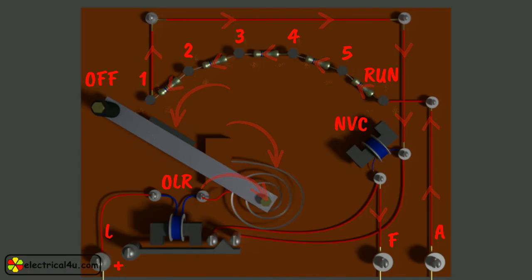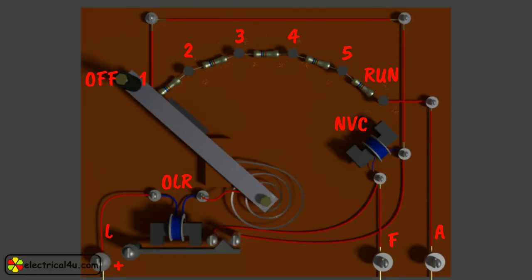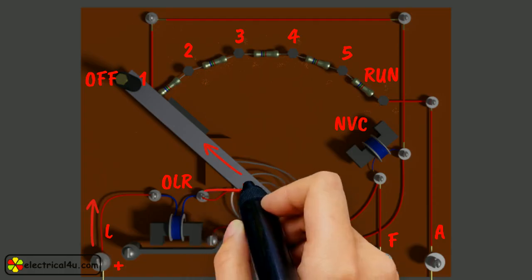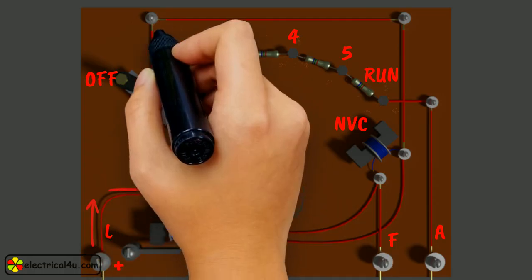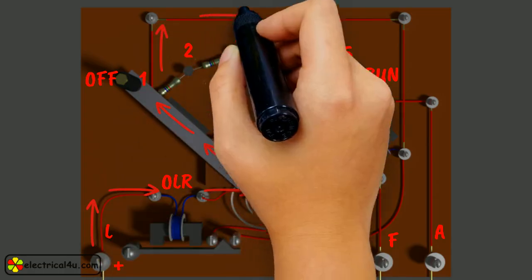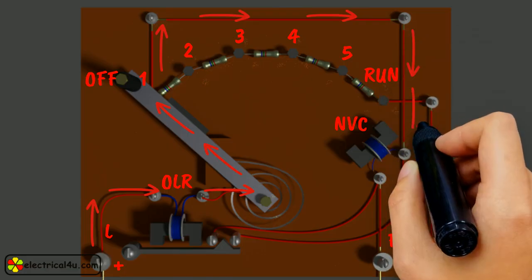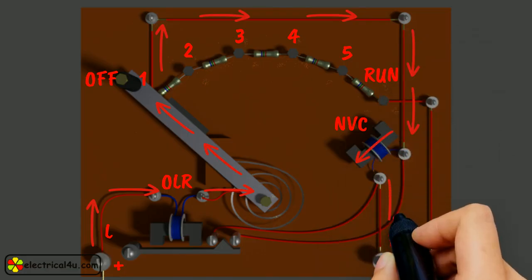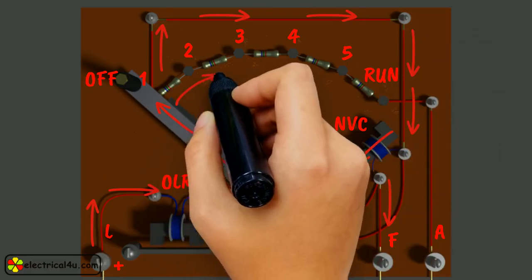The OLR and NVC acts as the two protecting devices of the starter. To start with, the handle is in the OFF position, then the handle is slowly moved against the spring force to make a contact with stud number 1. At this point, field winding of the shunt or the compound motor gets supplied through the parallel path provided to starting resistance through no-voltage coil. While entire starting resistance comes in series with the armature.